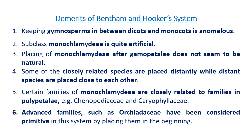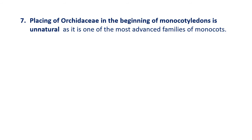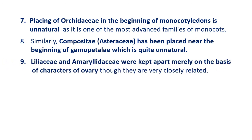Advanced families such as Orchidaceae have been considered primitive in the system by placing them at the beginning of Monocotyledonae, which is unnatural as it is one of the most advanced families of monocots. Similarly, Compositae (Asteraceae) has been placed near the beginning of Gamopetalae, which is quite unnatural. Liliaceae and Amaryllidaceae were kept apart merely on the basis of ovary position, though they are very closely related.